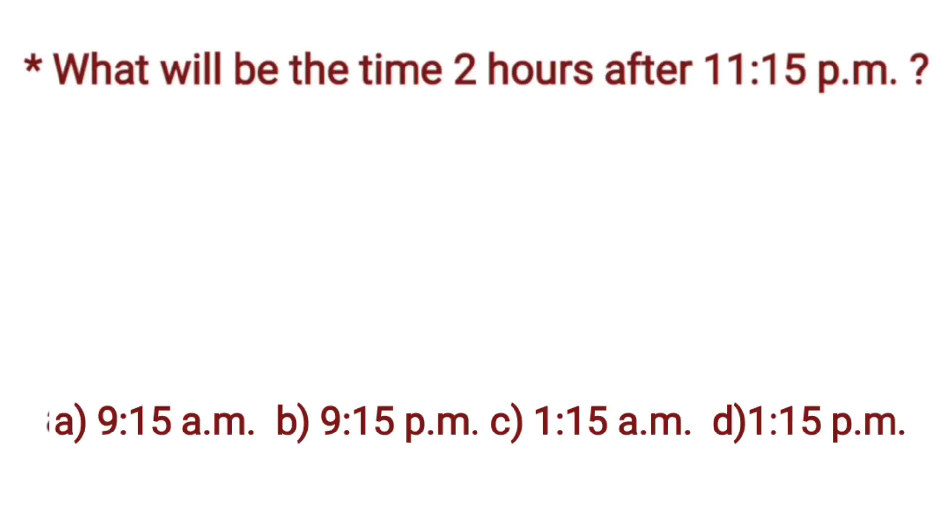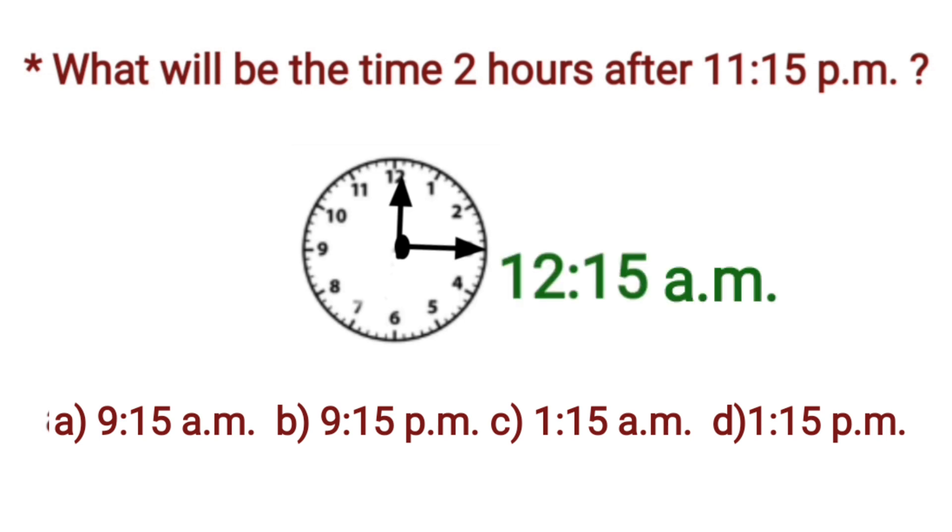Next question is, what will be the time after 2 hours from 11:15 PM? Here are the options. So, children, we have to find the time that will be after 2 hours from 11:15 PM. So, let's move it. It will move by 1 hour. It becomes 12:15 AM. As we know that after 12:00 AM and PM are changed. In this way, in the next hour, it will be at 1:15 AM.